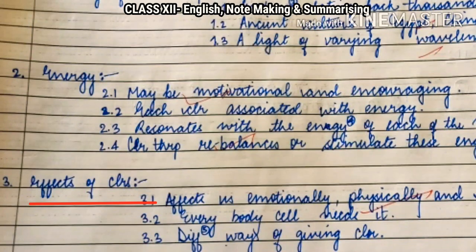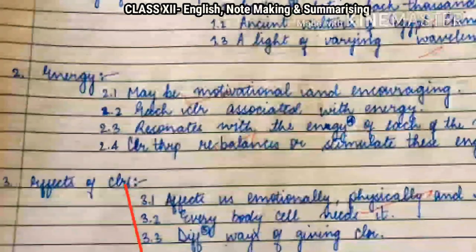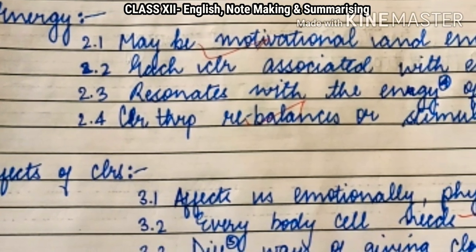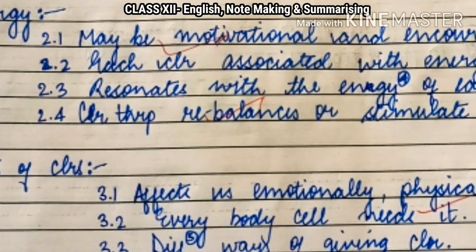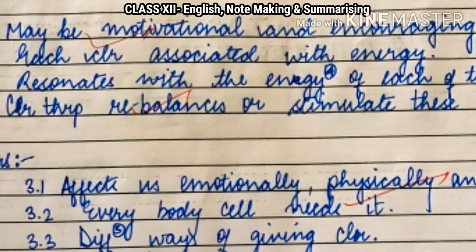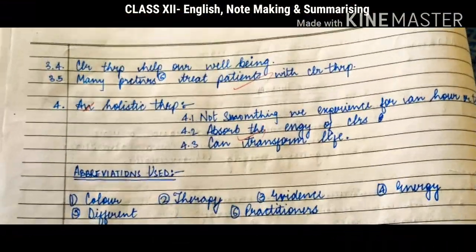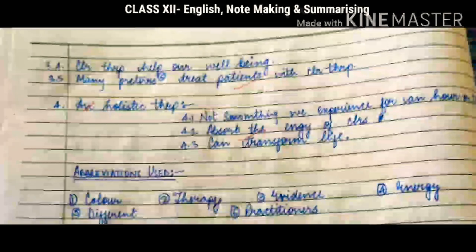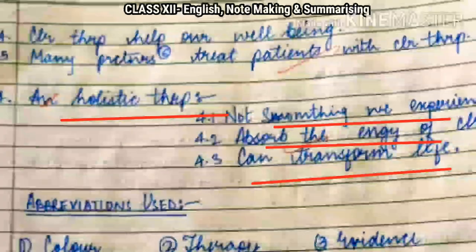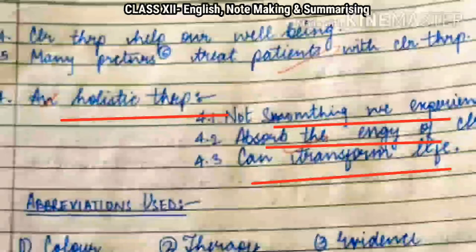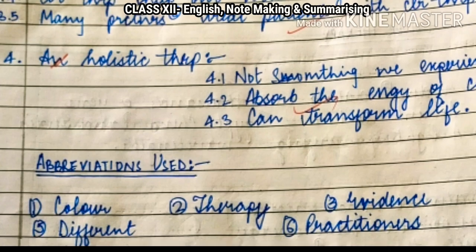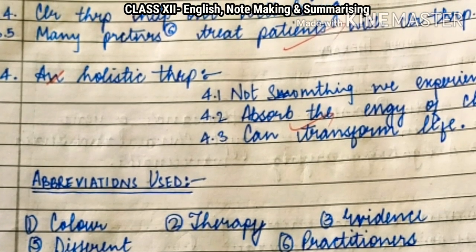The third sub-point: effects of colors — it has effects on all levels: emotional, physical, and spiritual. Every body cell needs it and there are different ways of giving colors. Notice how the student has abbreviated all the required words and given pointers 1, 2, and 3 so that the evaluator can identify which words were abbreviated. It helps our well-being and many practitioners treat patients with color therapy. The last sub-heading written is that it is a holistic therapy — not something we experience for an hour or two. It can transform our lives, and the student had given the abbreviations used.